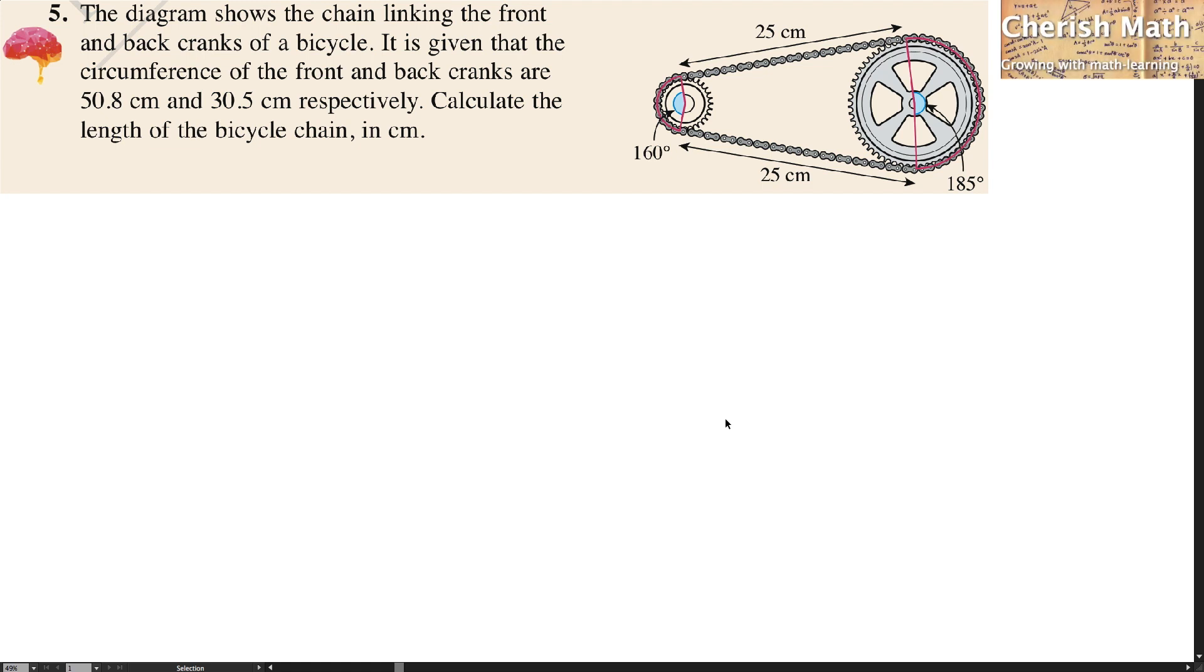Hi from Cherish Math, here is the problem. The diagram shows the chain linking the front and back cranks of a bicycle. It is given that the circumferences of the front and back cranks are 50.8 cm and 30.5 cm respectively. Calculate the length of the bicycle chain in cm.